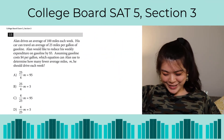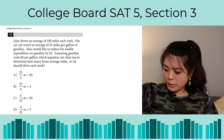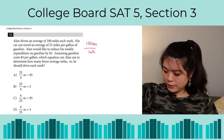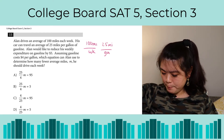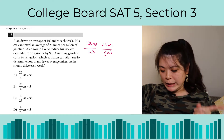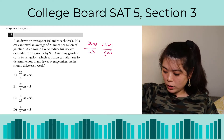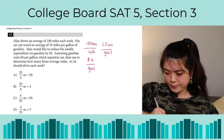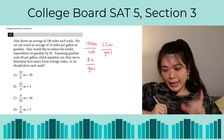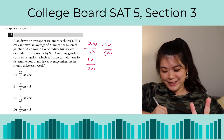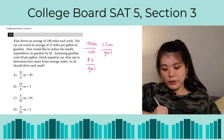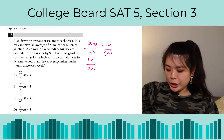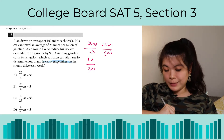Next up, one of my favorite questions. Alan drives an average of 100 miles each week — 100 miles per week. His car can travel an average of 25 miles per gallon. Alan would like to reduce his weekly expenditure by $5, assuming gasoline costs $4 per gallon. Which equation can he use to determine how many fewer average miles he should drive each week? There are two tricks to this question. The first is: on the right side of the equation, should we have a 95 or a 5? We want to reduce expenditure by $5, so we care about the savings, which is 5. So it can't be A or C — we're down to B and D.